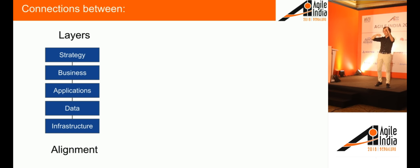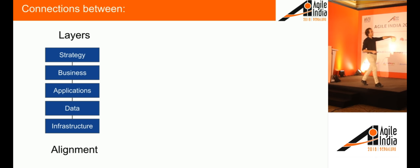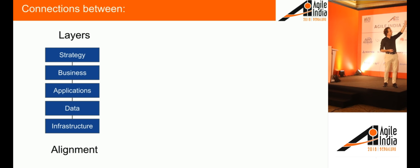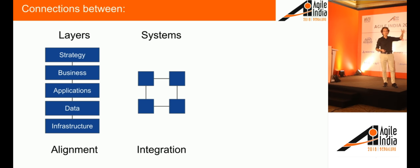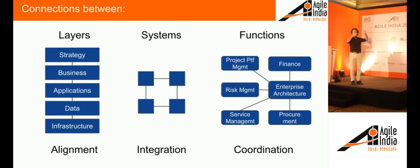The connections live in many different universes. One is connections between layers — layers of abstraction from business strategy to application to infrastructure. Getting this aligned is a very important architecture function and that's the value chain we talked about. But there's also connections between systems: how is stuff integrated? Are they silos? Is it point-to-point? Is it a service bus? That has a big impact on how your system behaves.